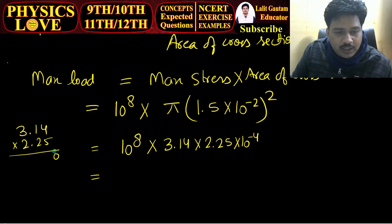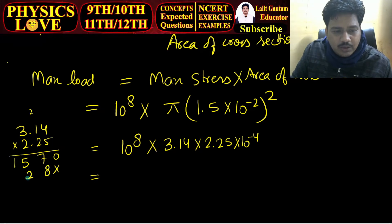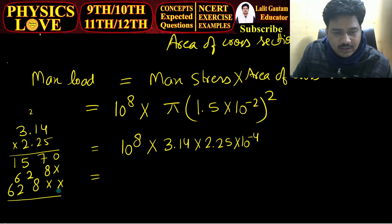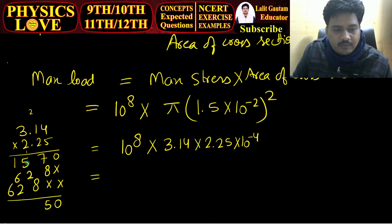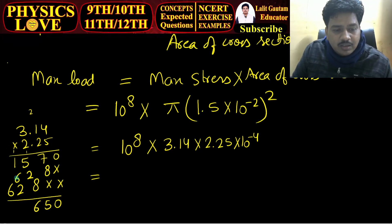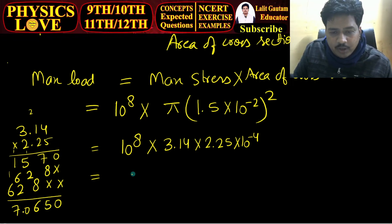Calculating: 3.14 multiplied by 2.25. Working through the multiplication: 5 fours are 20, 5 ones are 5, giving 0.8 plus 7 is 15, 5 plus 1 is 6, 6 plus 2 is 8, plus 8 is 16, 1 and 6 plus 4 is 10, 6 plus 1 is 7. The result is 7.0650.